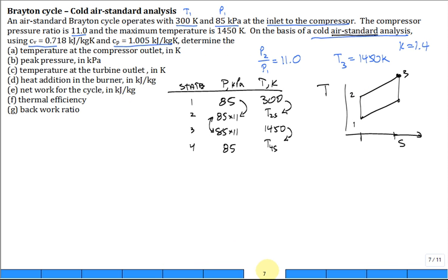So, for part A, the temperature at the compressor outlet, that's T2, is equal to whatever T2S. How about for B, peak pressure? That's almost too easy. That's P2 is equal to P3 is equal to 85 times 11.